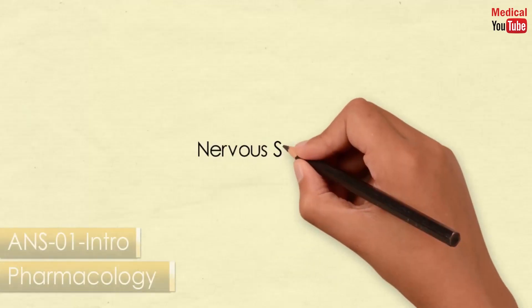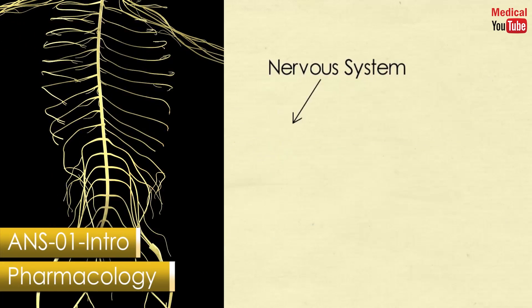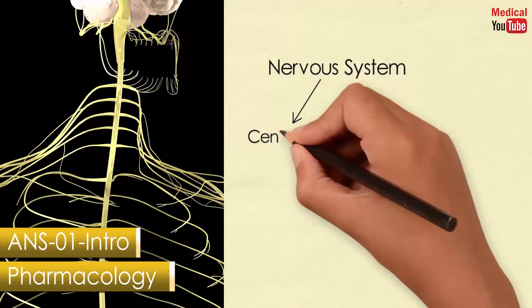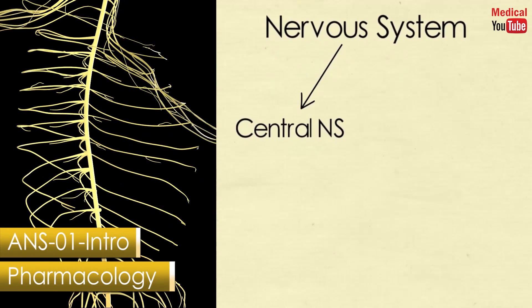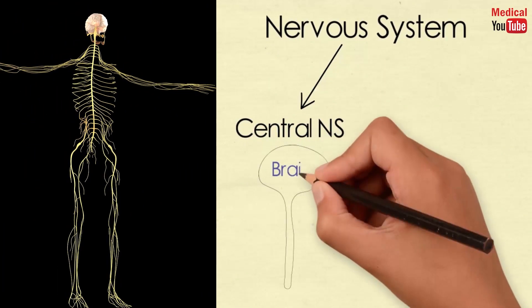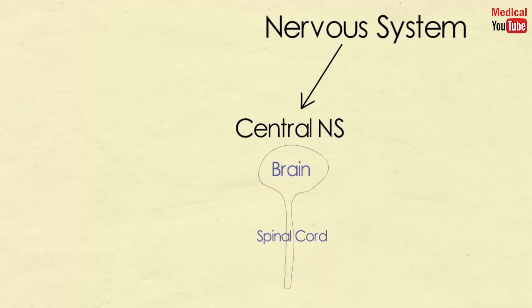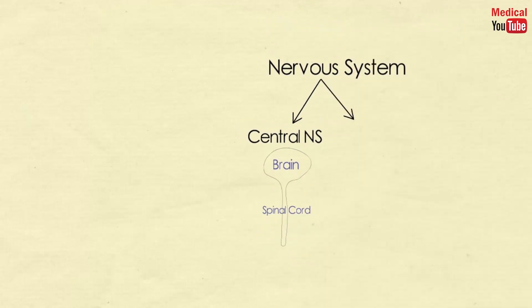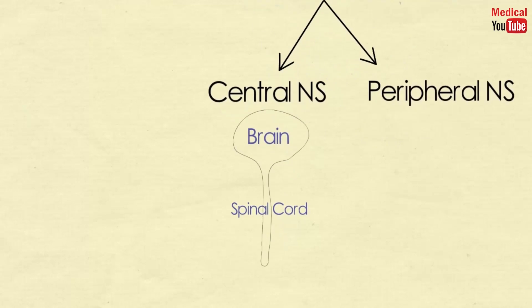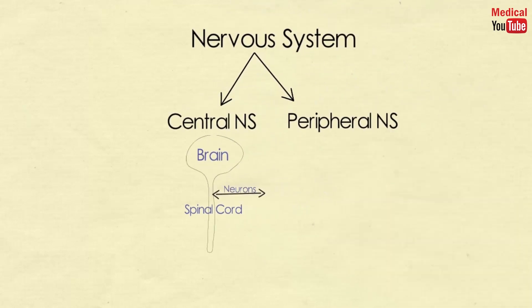The nervous system is divided into two anatomical divisions. The central nervous system, which is composed of the brain and spinal cord, and the peripheral nervous system, which includes neurons located outside the brain and spinal cord — that is, any nerves that enter or leave the CNS.